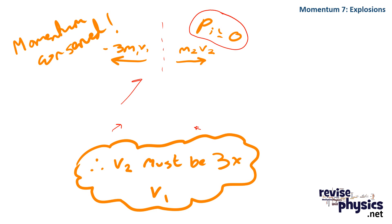And from our balanced momentum equation here, we can tell that v2 must be three times v1 since the masses cancel.